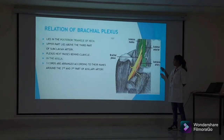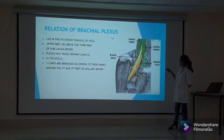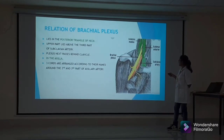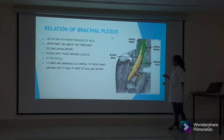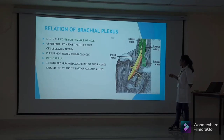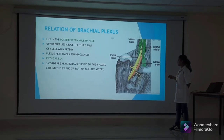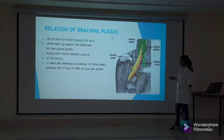The brachial plexus lies in the posterior triangle of the neck. Its upper part lies above the third part of the subclavian artery, and it passes behind the clavicle. In the axilla, the three cords are arranged around the second and third parts of the axillary artery according to their names.